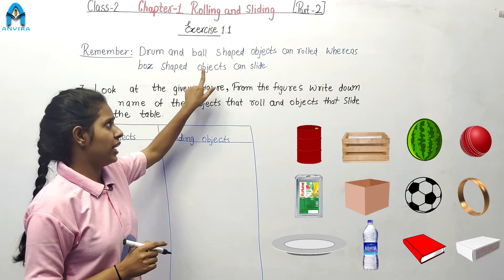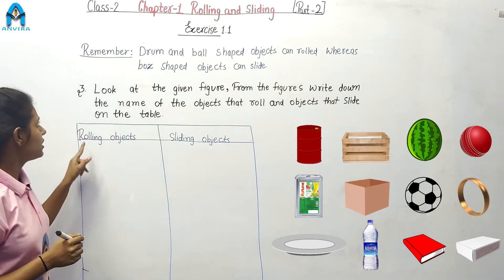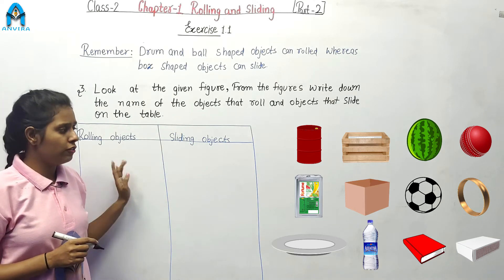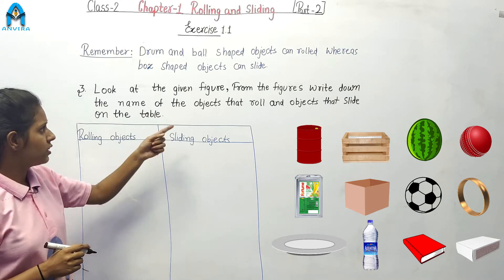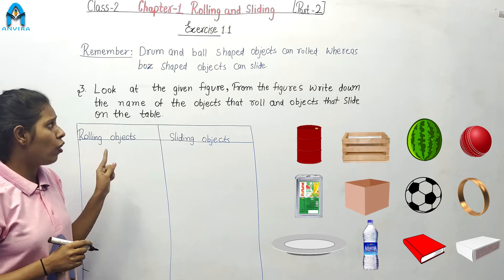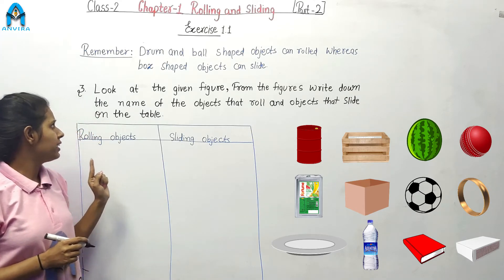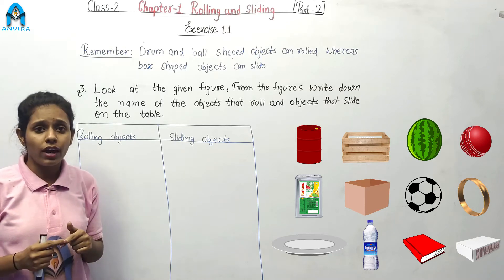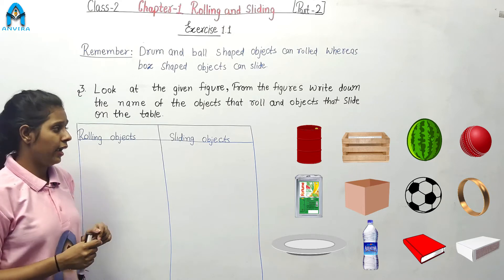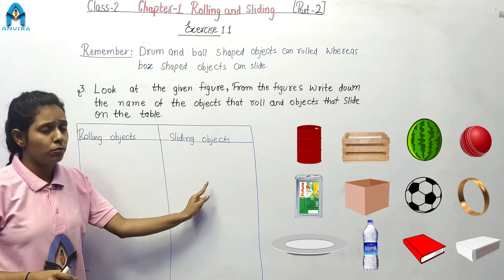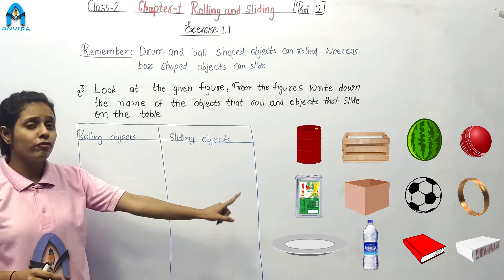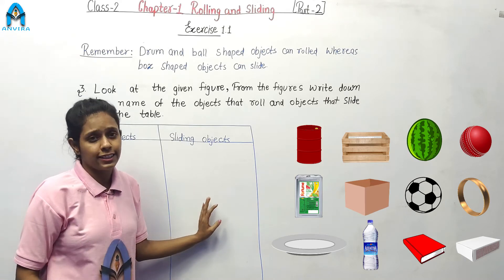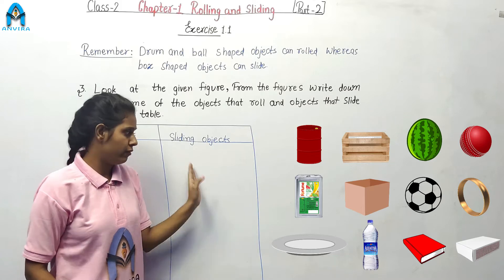Now let's start question number 3. Look at the given figures. In this question, you have to look at the given figures, identify the objects, and find out which objects can roll and which can slide. Write the name of the rolling objects on one side and the sliding objects on the other side, and fill the table.